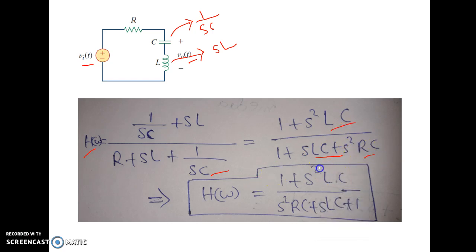you will get is equal to 1 plus S squared LC by 1 plus SLC plus S squared RC. Clear? So, what we are getting is H of omega or H of S equal to 1 plus S squared LC by S squared RC plus SLC plus 1.